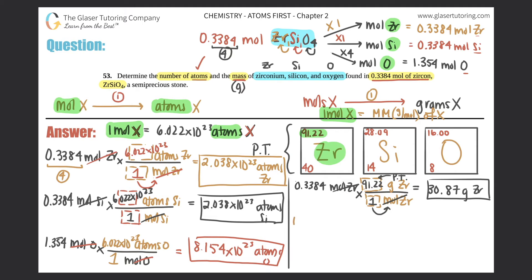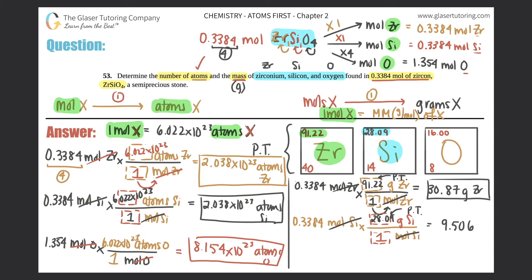Now for silicon: 0.3384 moles of silicon — moles of silicon on the bottom, grams on top. One mole of anything equals the molar mass from the periodic table — it will always be the larger number. For silicon that's 28.09. Cancel out moles. 0.3384 times 28.09 equals 9.506 grams of silicon (four sig figs).